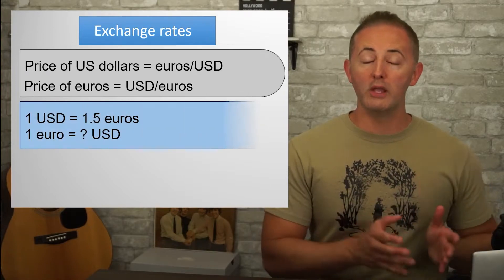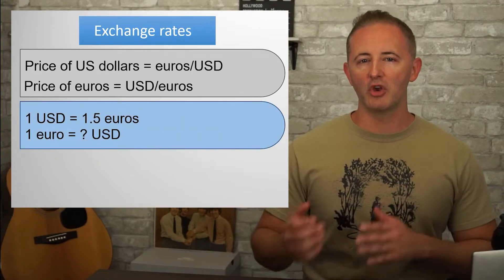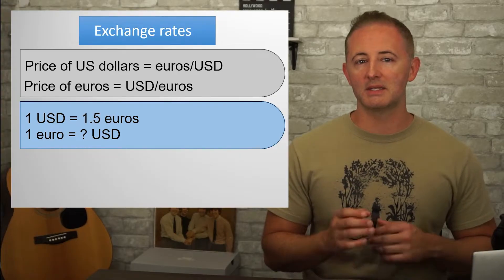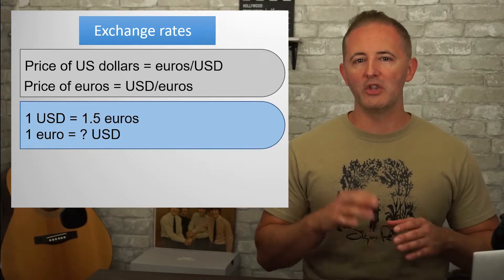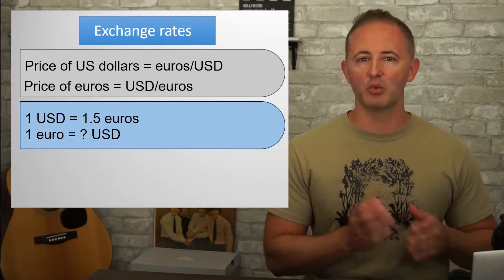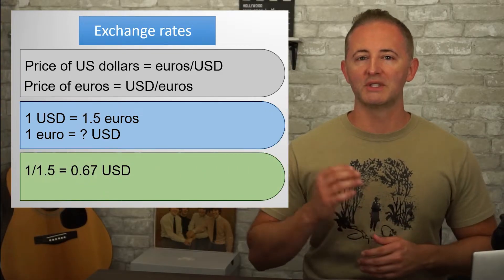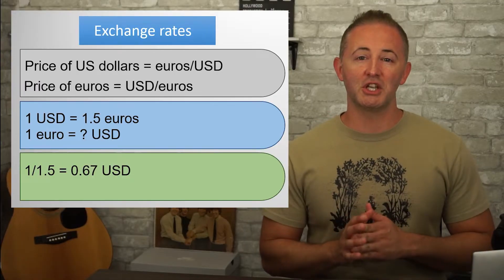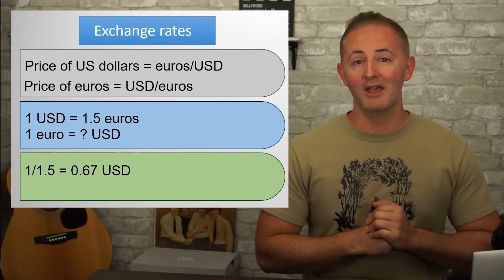Let's say that we know that one US dollar is equal to 1.5 euros. So we want to know how many dollars it takes to get one euro. Well, the euro price of the dollar is dollars over euros, so it's 1 over 1.5, which equals 67 cents. The beautiful thing about exchange rates is that you're really just finding the reciprocal.